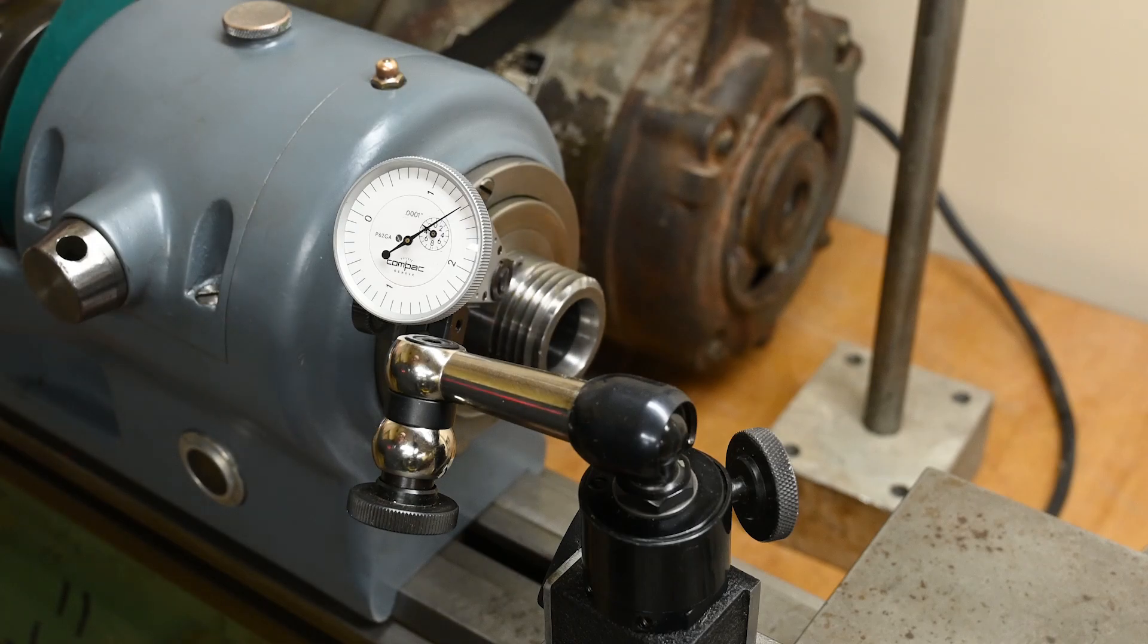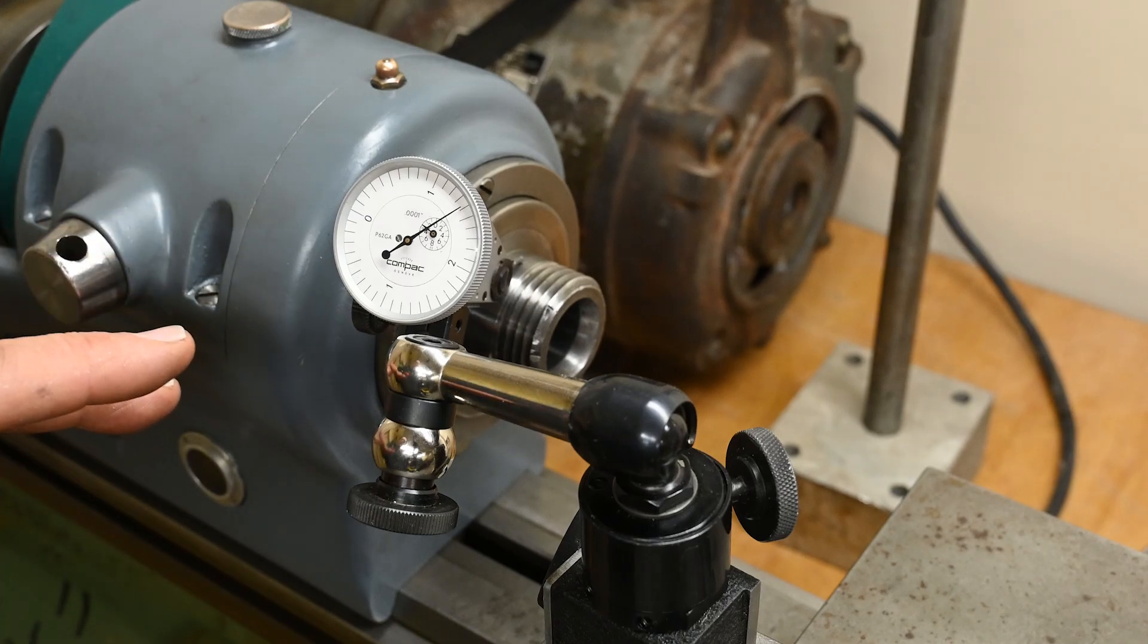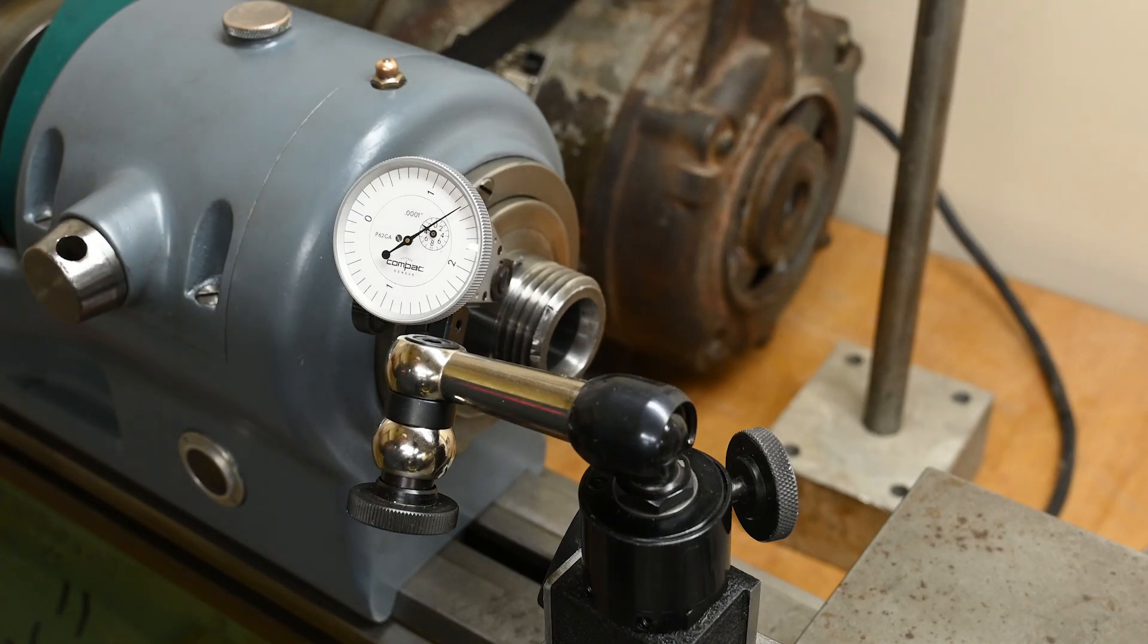This is a really great indicator, it's a Compac which I don't believe they exist anymore. They were absorbed into Interrapid. But it's a tenths indicator and look at how far apart the graduations are. So it kind of reminds me a little bit of the Starrett 199 master precision level. There's other levels that measure to the same precision but the graduation lines on the Starrett's are so far apart I'd argue it's quite a bit more accurate because it's easy to interpolate between the graduation marks.